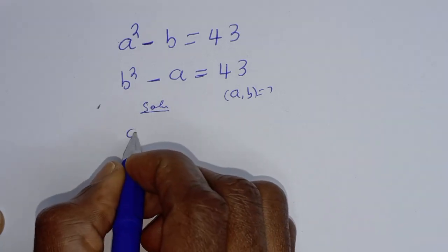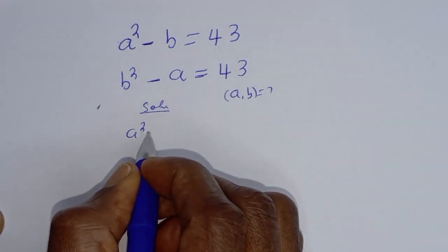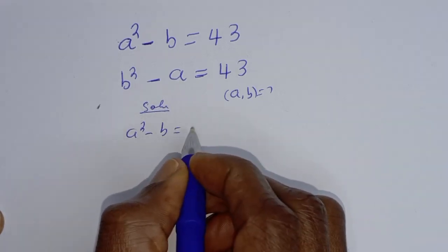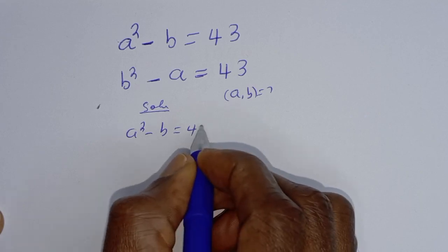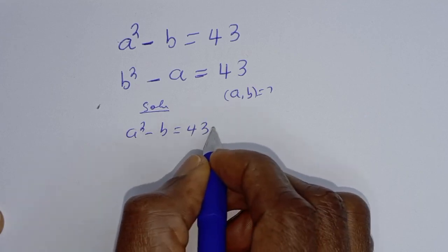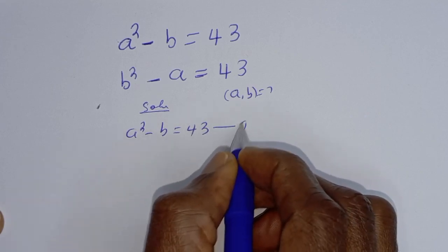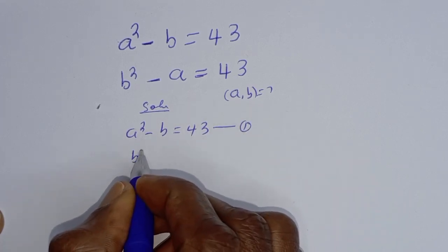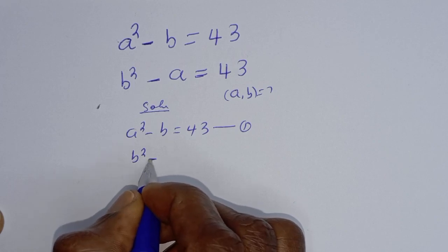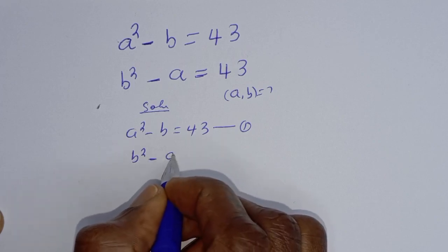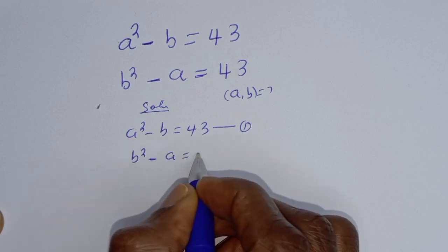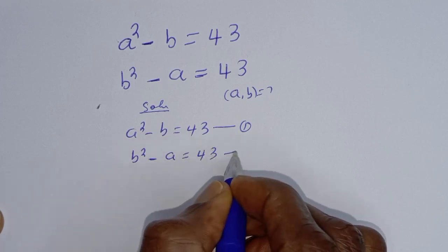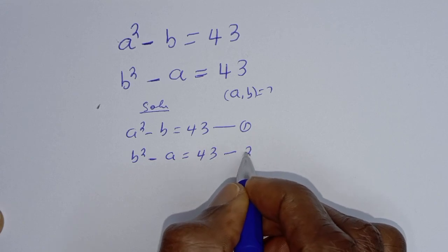A squared minus B is equal to 43 — let's call this equation 1. B squared minus A is equal to 43 — let's call this equation 2.